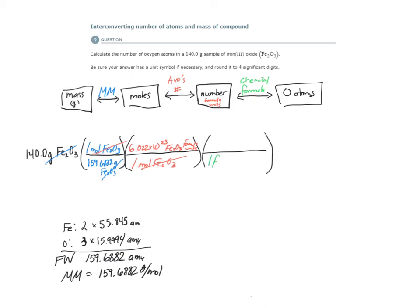In one formula unit of Fe2O3, what's our endpoint? We want oxygen atoms. How many oxygen atoms are in one formula unit of Fe2O3? Let's look at the chemical formula again.